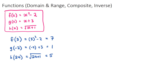Next we move on to domain and range. Domain is associated with the possible x values, and range is associated with the possible y values. Try to remember: domain is the input, range is the output.